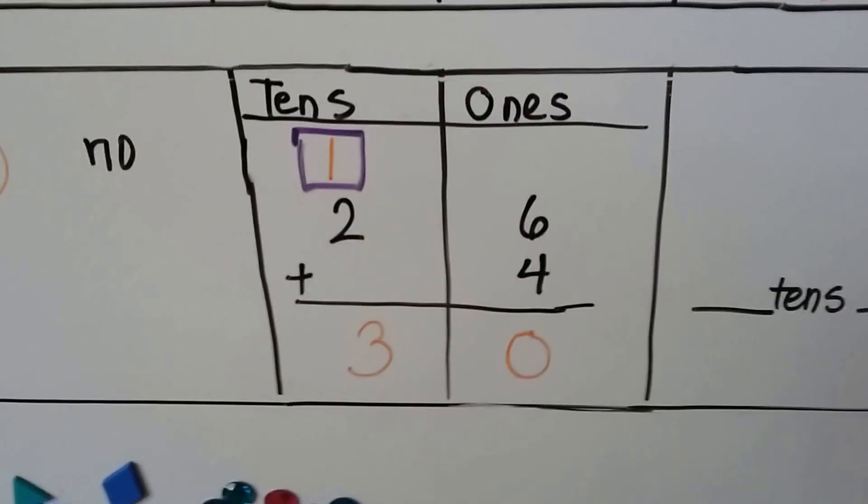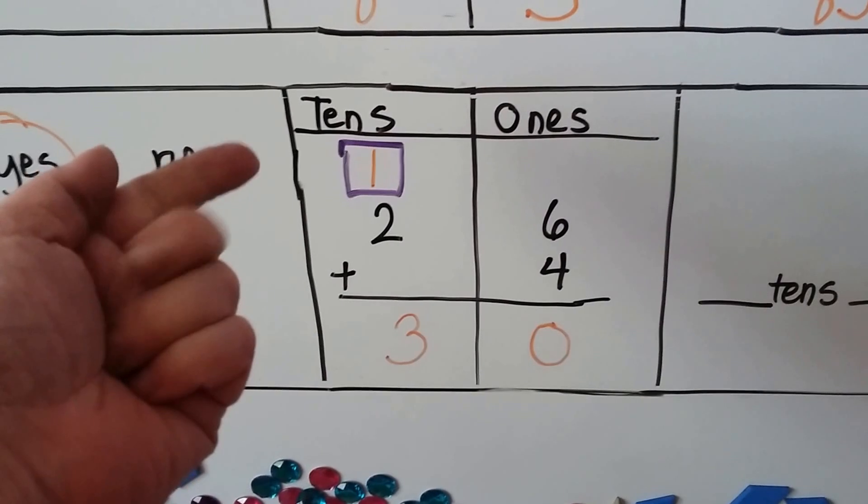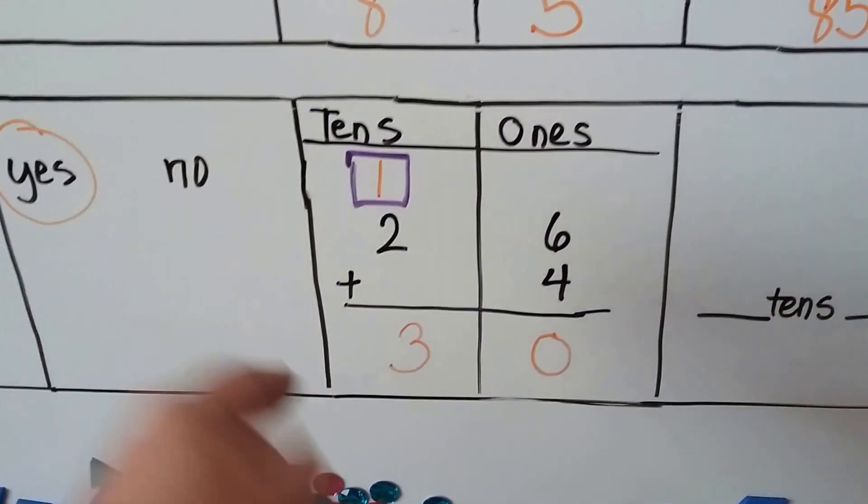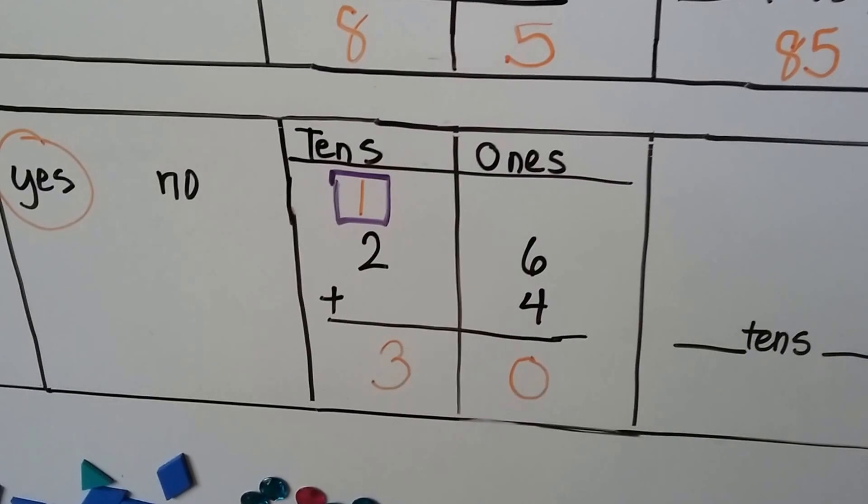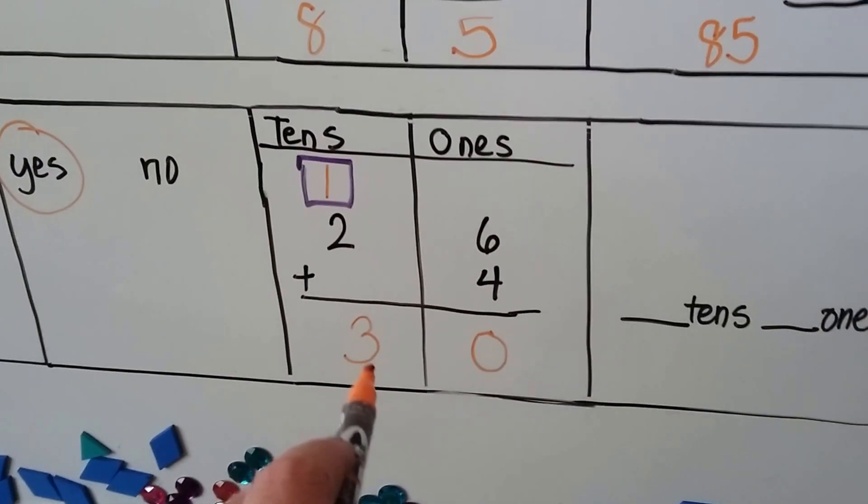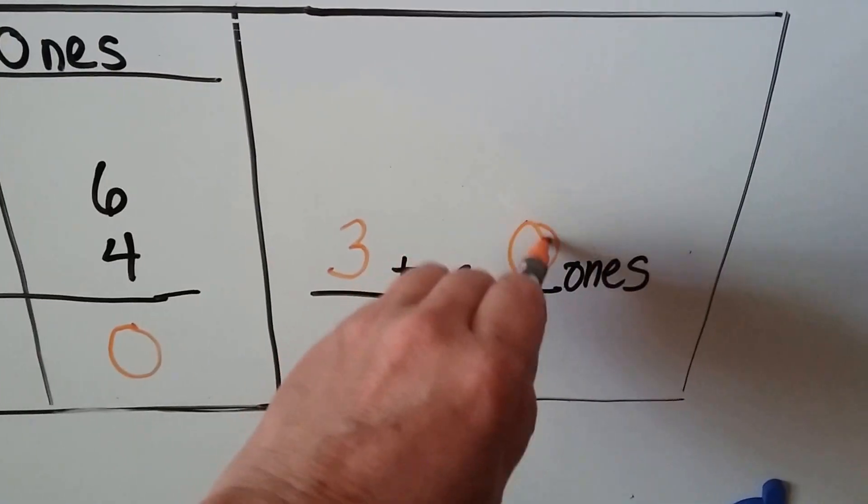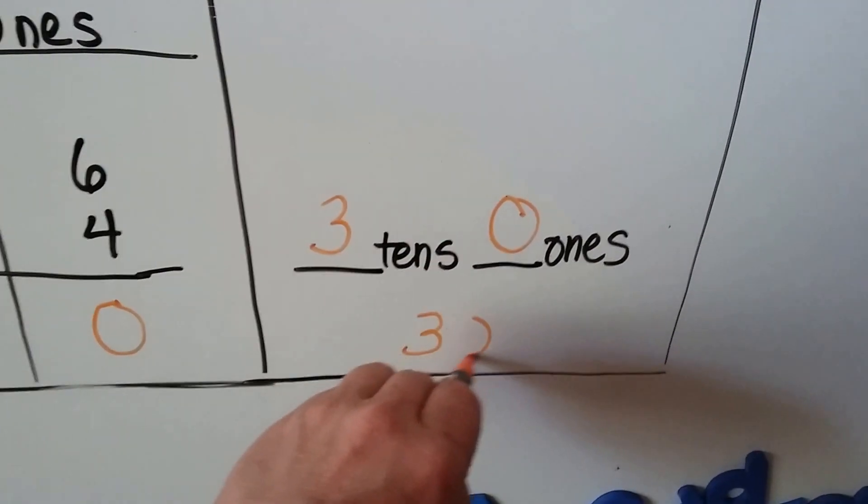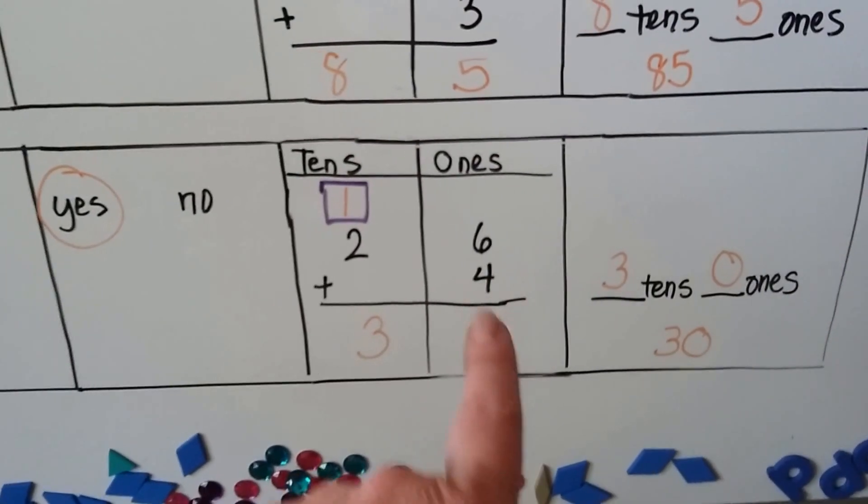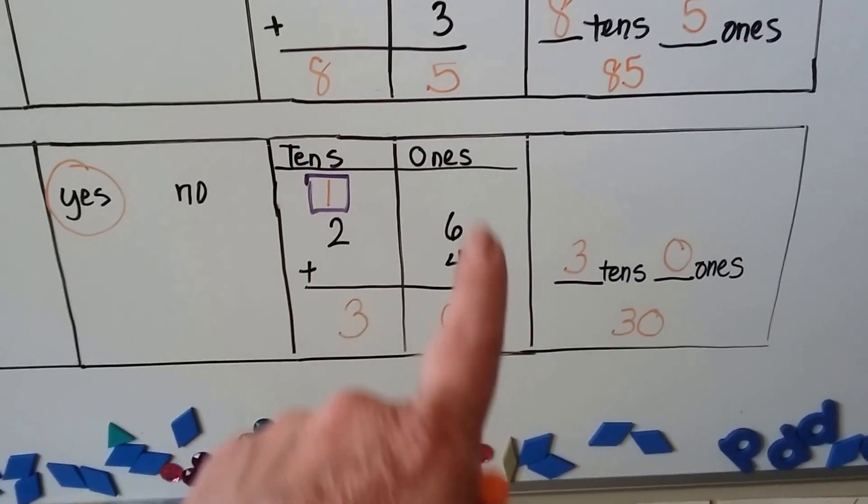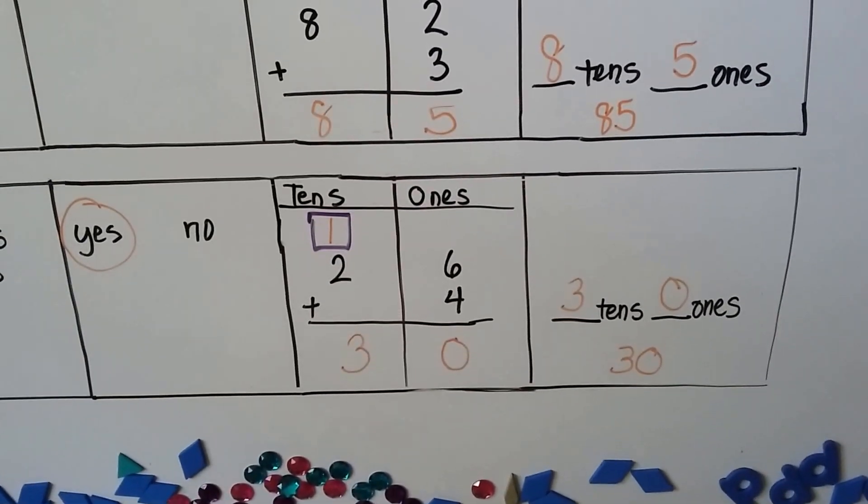Let's check it by counting on. 26 plus 4. 26, 27, 28, 29, 30. Yeah, it is 30. So we have 3 tens and no ones. We have 30. See? When we get too many ones, we can group them together and regroup them to the tens place, however many tens we make. Okay?